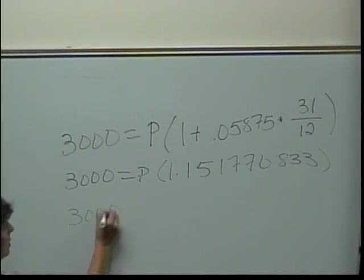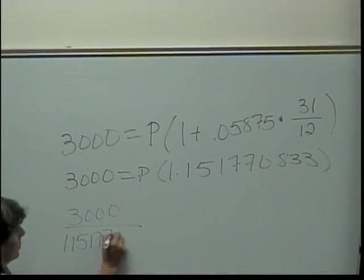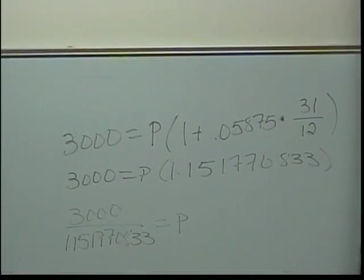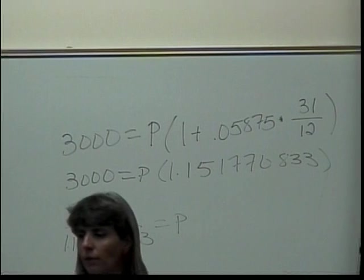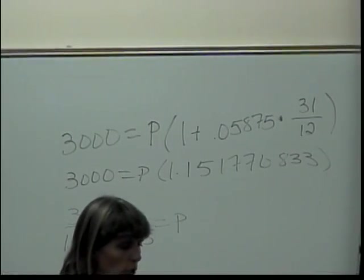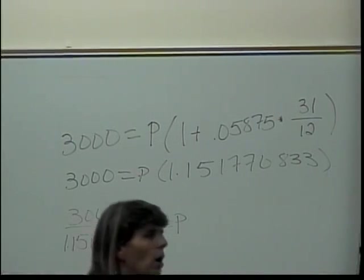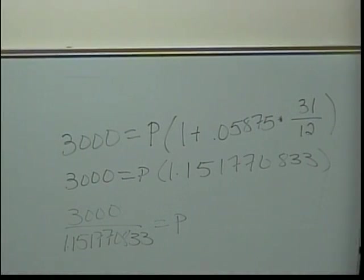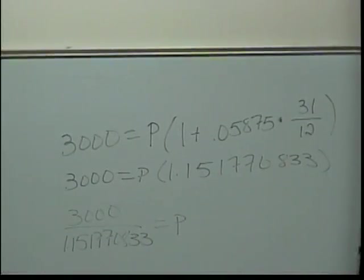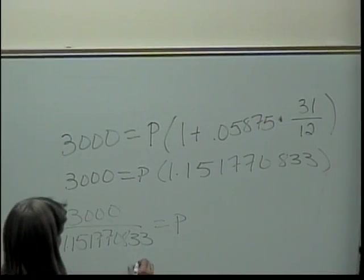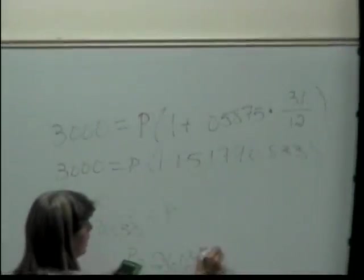I'm going to do 3,000 divided by that number, and that's going to tell me what my P is. How do I do that on my calculator without typing the whole thing in again? Use the Answer button — everybody should have one. It'll use your last answer. So type in 3,000 divided by Answer. On the TI-83 it's down by the negative sign at the bottom. On the TI-30XA it should be somewhere near the bottom too. That tells me I need to deposit $2,604.68 to get there.